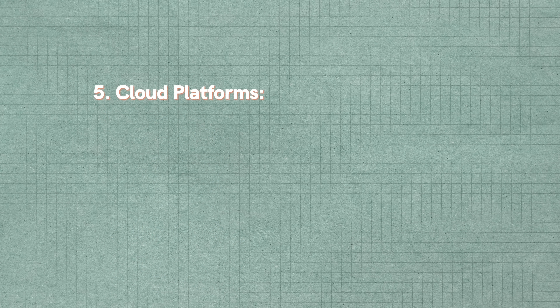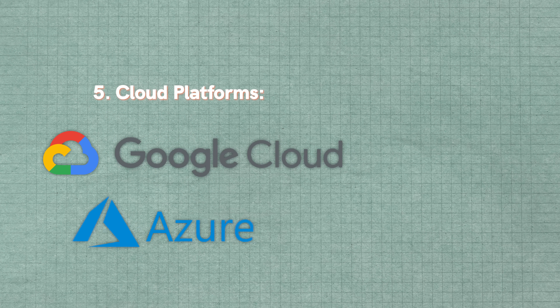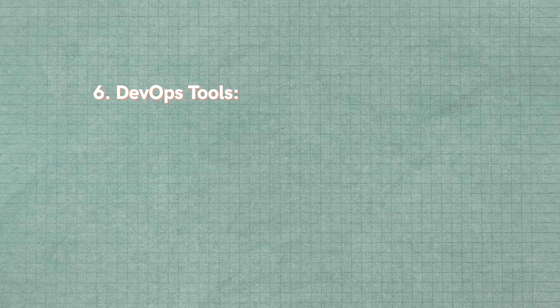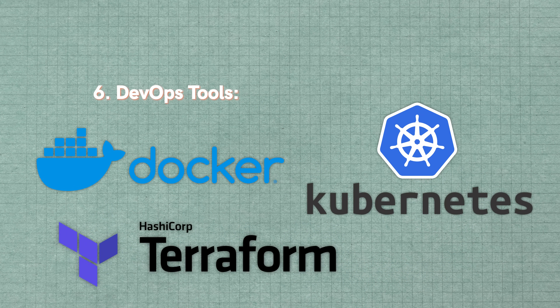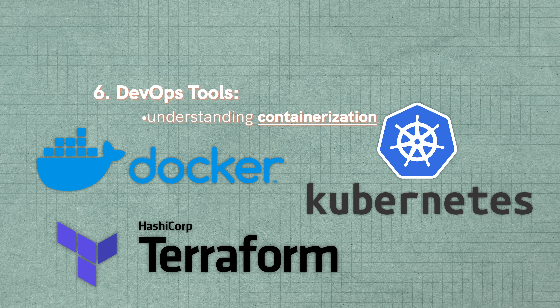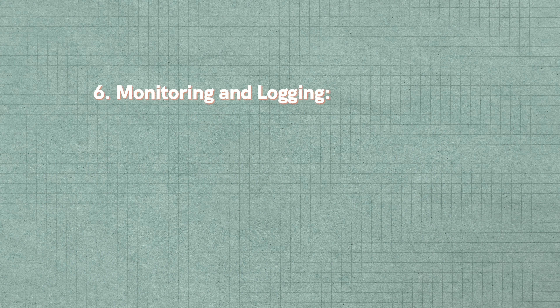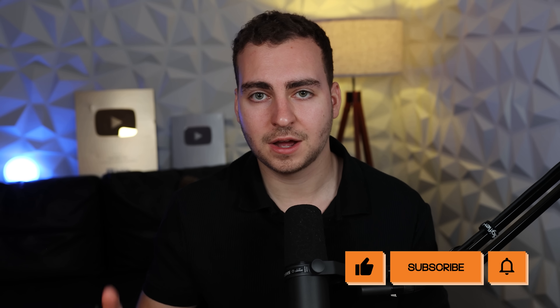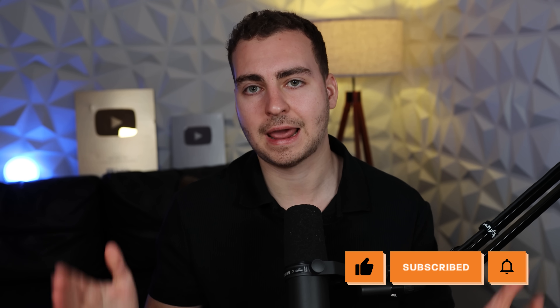For cloud platforms, just pick one — we have Google Cloud, Azure, Amazon Web Services, and Akamai or other third-party cloud services. Beyond that, there are more DevOps-specific tools like Docker, Kubernetes, and Terraform for understanding containerization. Lastly, monitoring and logging can't be ignored — tools here include Prometheus, Grafana, and the Elastic stack. That's my list of tools that every software engineer needs to know. Let me know what I forgot in the comments down below, and happy coding.